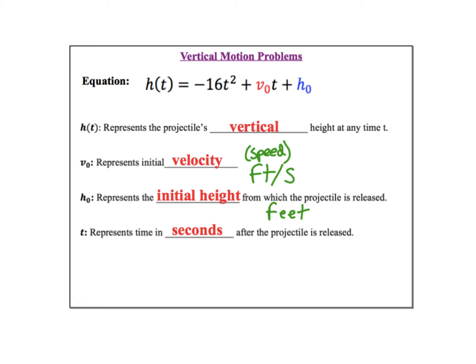Remember that the equation that models a vertical motion problem is h(t) equals negative 16t squared plus v sub zero t plus h sub zero. The h(t) represents the projectile's vertical height at any time t. The v sub zero is the initial velocity in feet per second. The h sub zero is the initial height from which the projectile was released, and t is the time in seconds after the projectile was released.